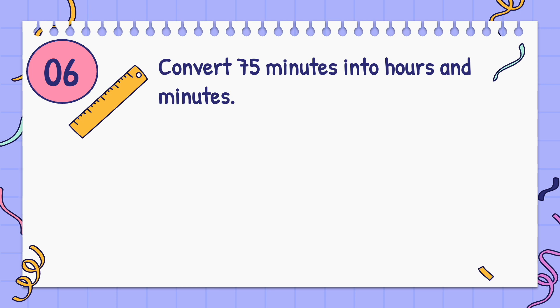Convert 75 minutes into hours and minutes. Answer: 1 hour and 15 minutes.